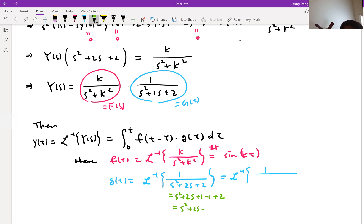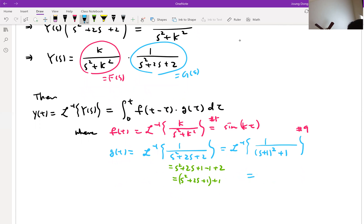Which is s square plus 2s plus 1 plus 1. This is perfect square, right? So it is s plus 1 square plus 1. Look at that. Where is it? It is number 9, right? Number 9. So this guy is equal to number 9, which is e to the a t times sin b t, right? e to the minus t times sin t. Because a is minus 1, came from here, and b is 1. And your numerator must be b, which is same with this added one, right?